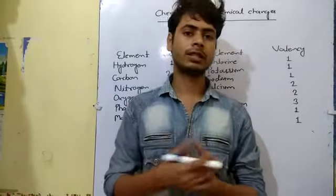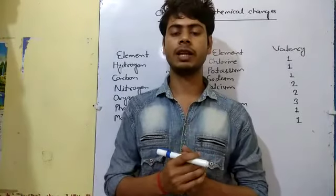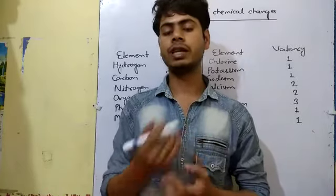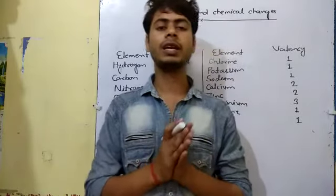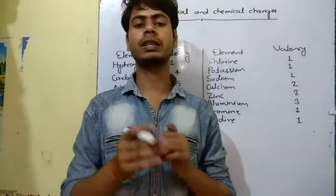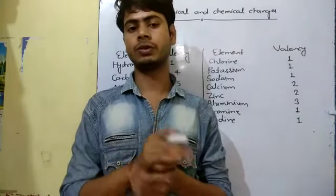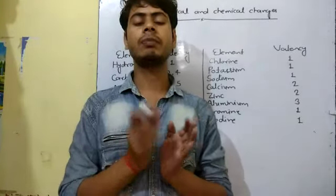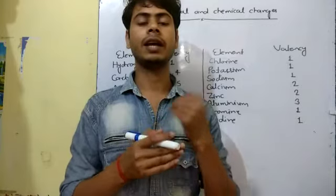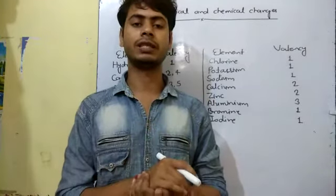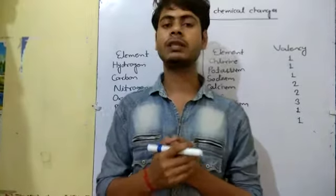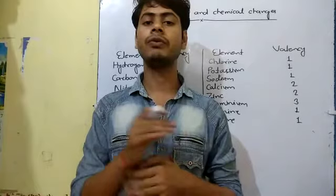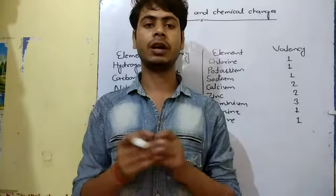First of all, discussing what is the valency of an element. So we write here the definition of the valency. Valency is the combining capacity of an element, or we can say the combining capacity of an atom. There are various types of elements that show various types of valencies, and that is known as variable valencies.